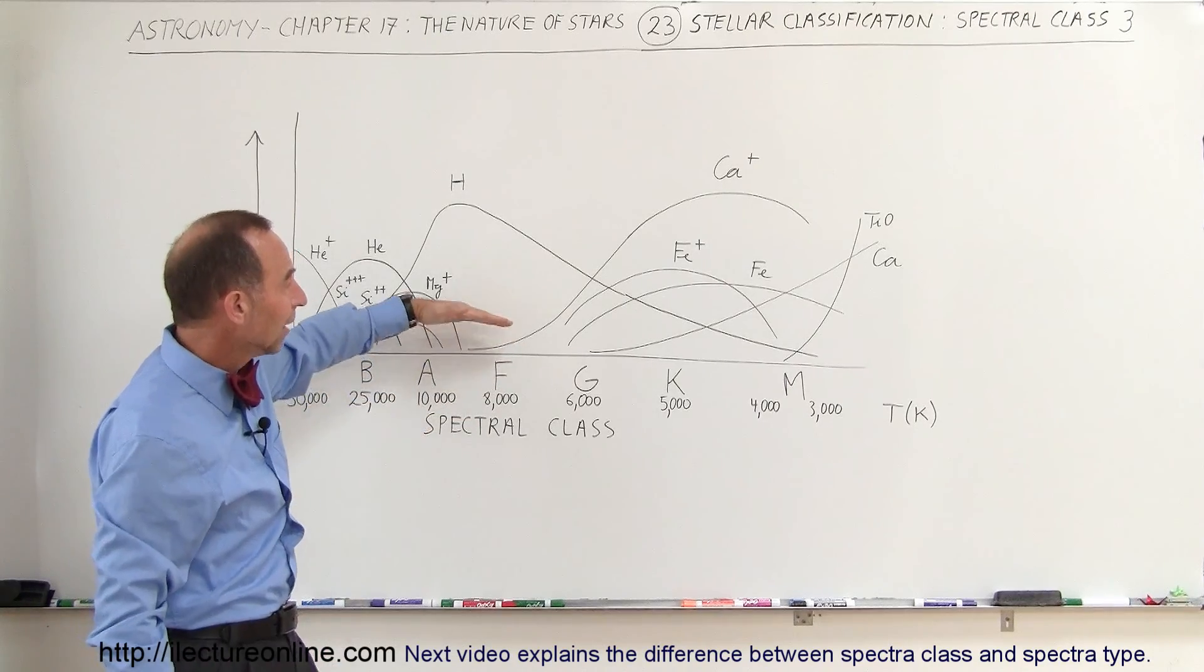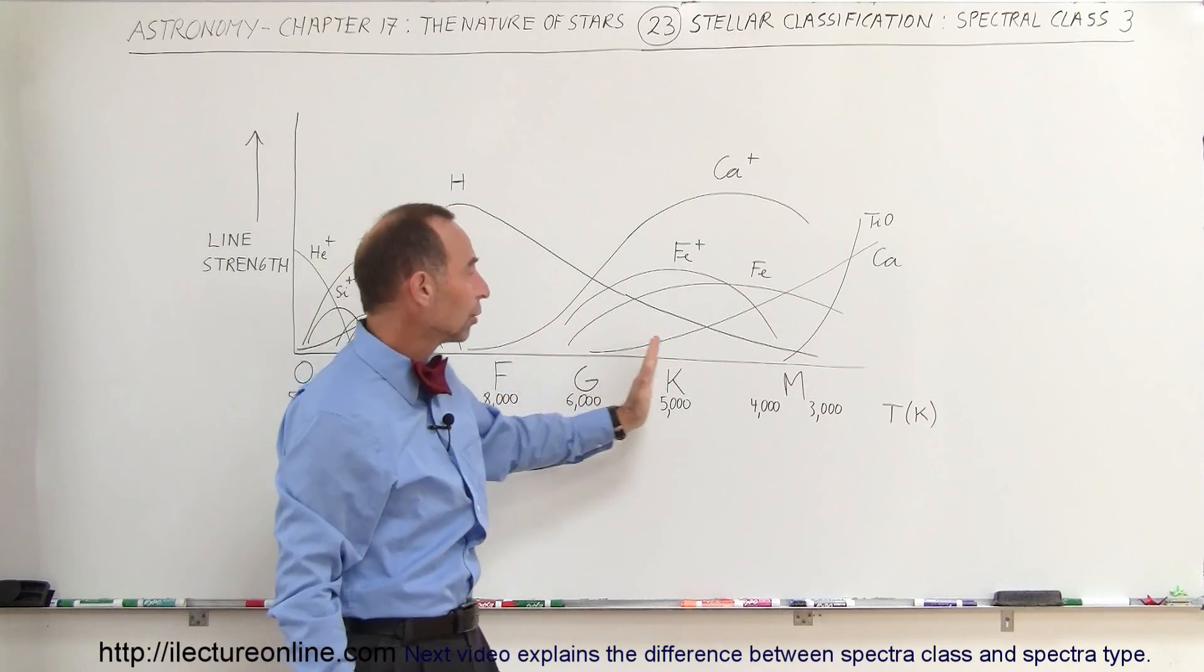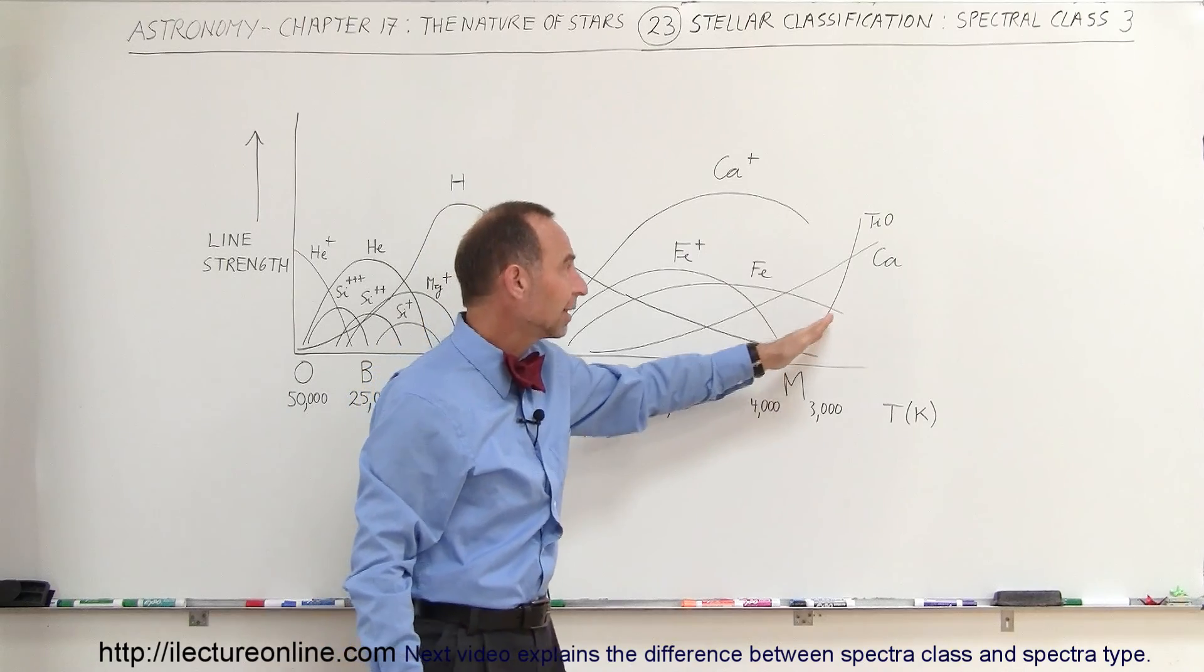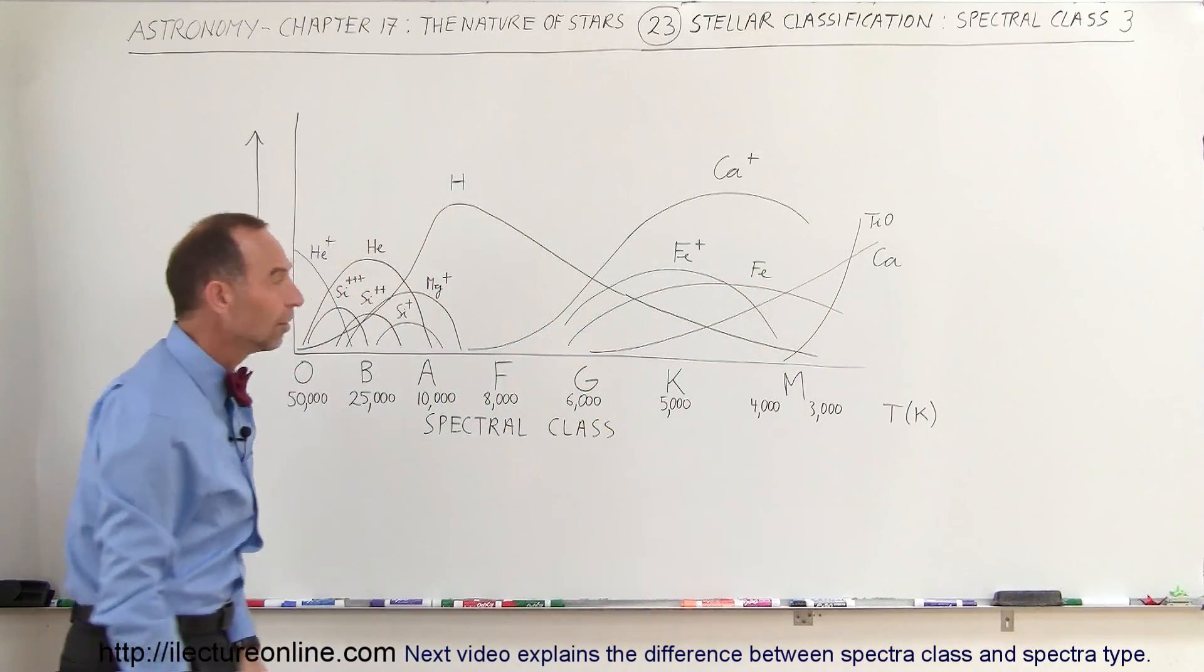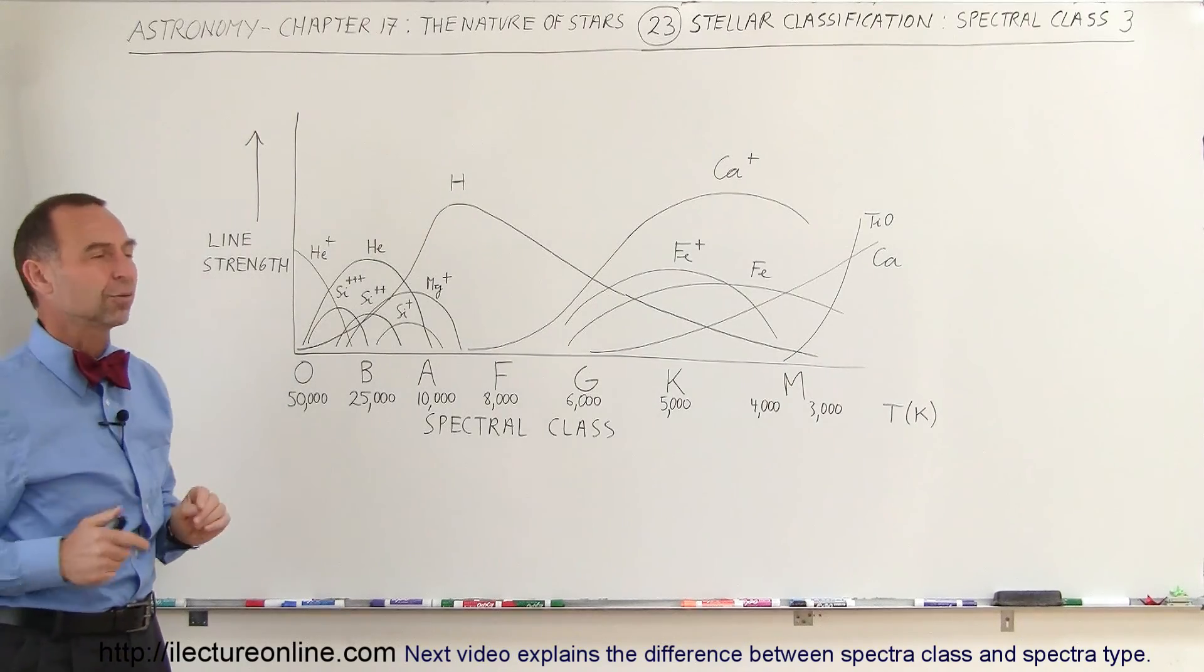Also notice that the neutral calcium line becomes stronger and stronger as we get cooler and cooler stars. Eventually we can get to the cooler M-class stars, and we see titanium oxide appearing in the spectral lines. That's actually a really good way for us to double check to see what class stars we're looking at.